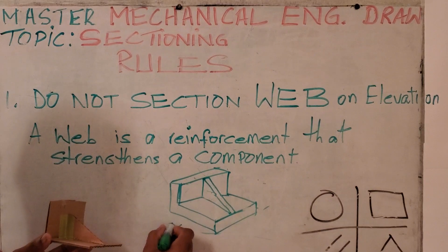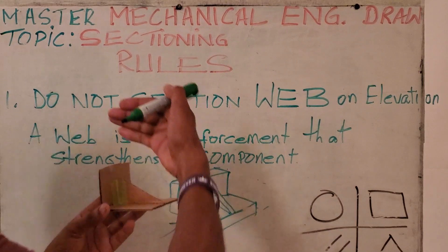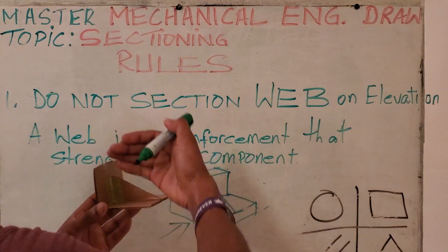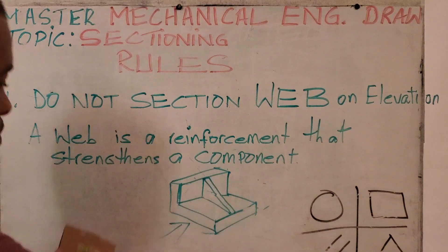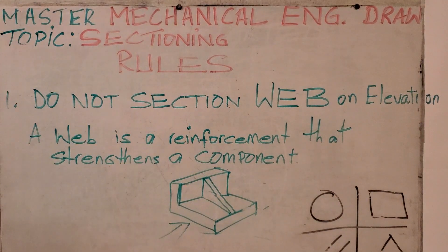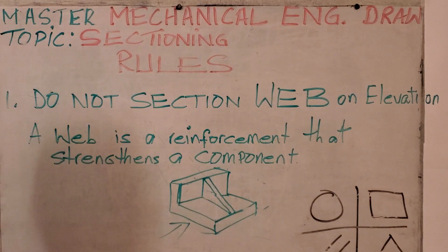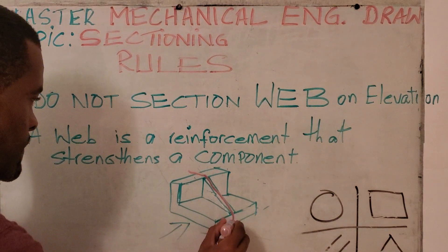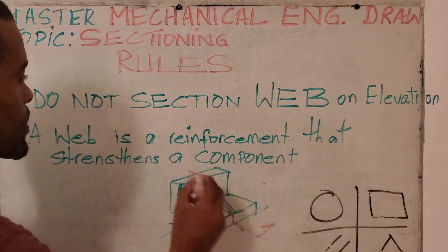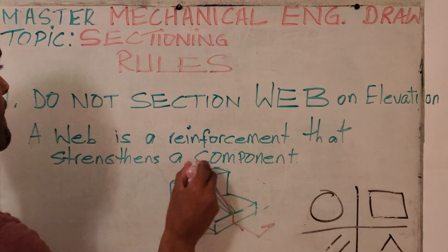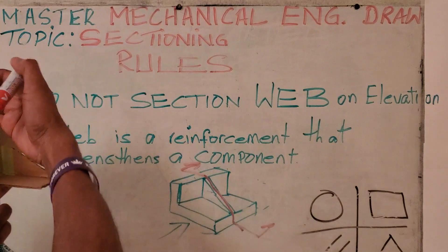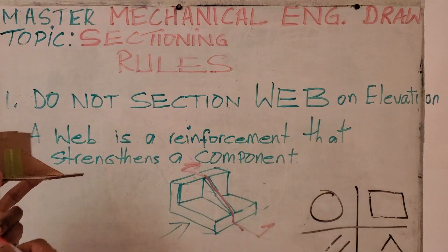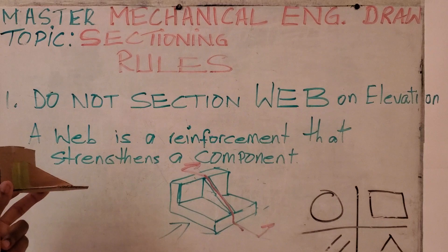Assuming that here is the front and we were to cut this across here, and we were to view this here, so we cut this here and we view here this would have been the front elevation.